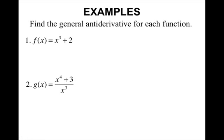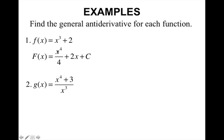Alright, some examples — we want to find the general antiderivative for each function. I'm working backwards to find which function gave me the derivative of x cubed plus 2. Applying the power rule to x cubed: add 1 to the exponent to get x to the fourth, and divide by that new exponent — divide by 4. Since I have a constant, the antiderivative of the constant is the constant times x. So my antiderivative is x to the fourth over 4 plus 2x plus C. Don't forget the plus C — you will lose a full point on the AP test if you forget it.